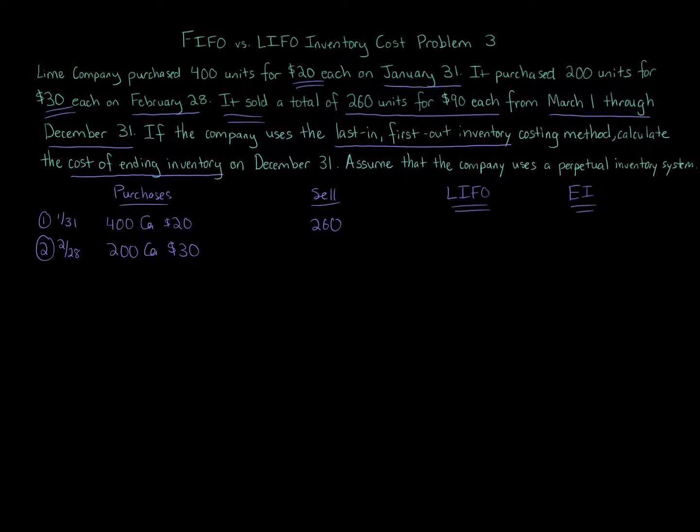We're using LIFO. LIFO is last in, first out, also known as FISH. First in, still here. So last in, first out goes to determining the cost of goods sold. And for ending inventory, what's left, first in is still here. So basically we go in reverse chronological order. We start at the bottom and go up.